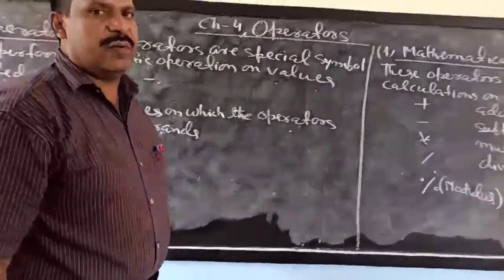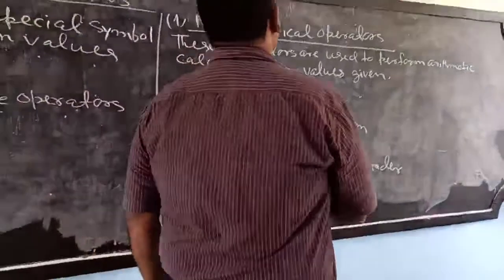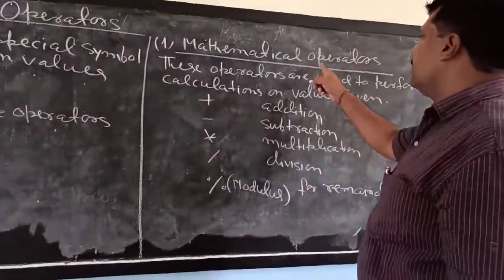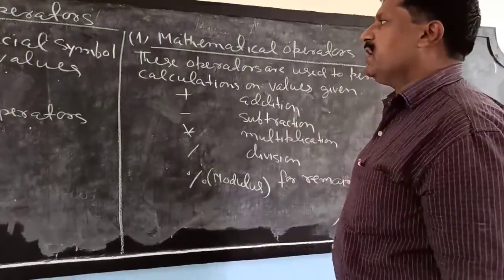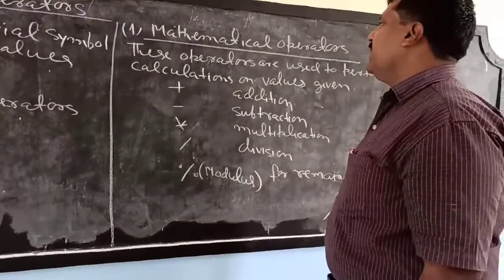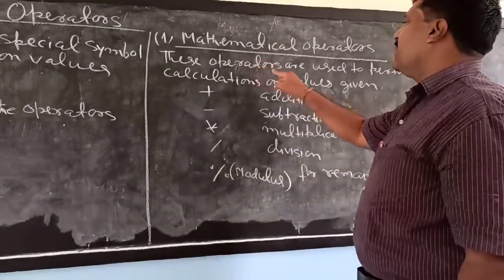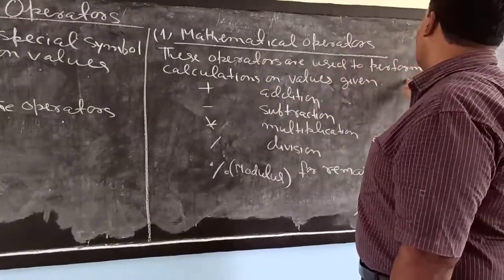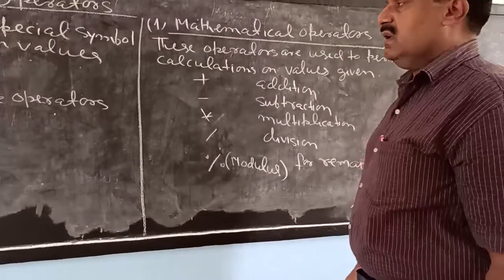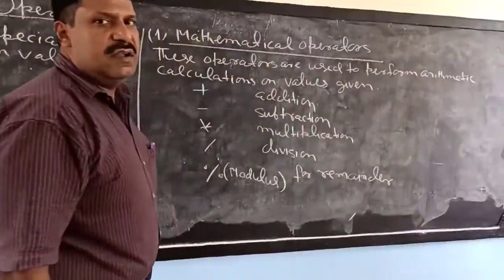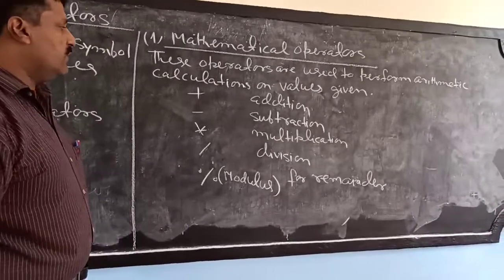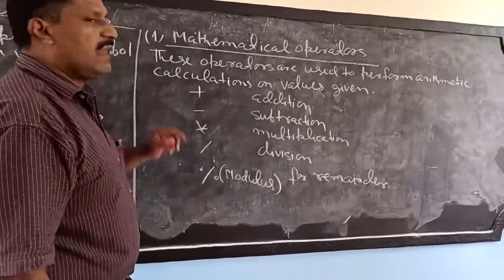So now we have learned two terms: what are operators and what are operands. The first type is called mathematical or arithmetic operators. What are mathematical operators? These operators are used to perform arithmetic calculations on the values given.